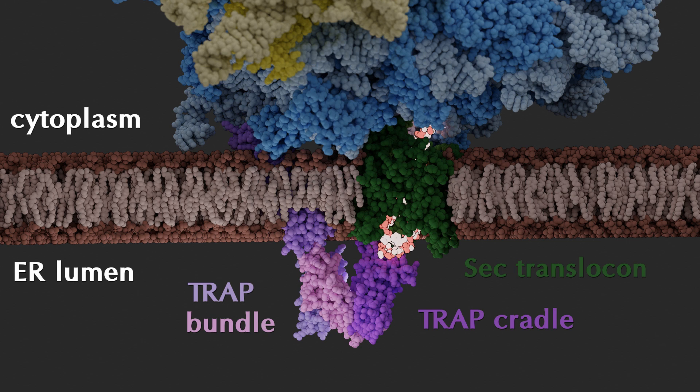The translocon-associated complex, TRAP, is involved in the translocation of secreted proteins into the ER.